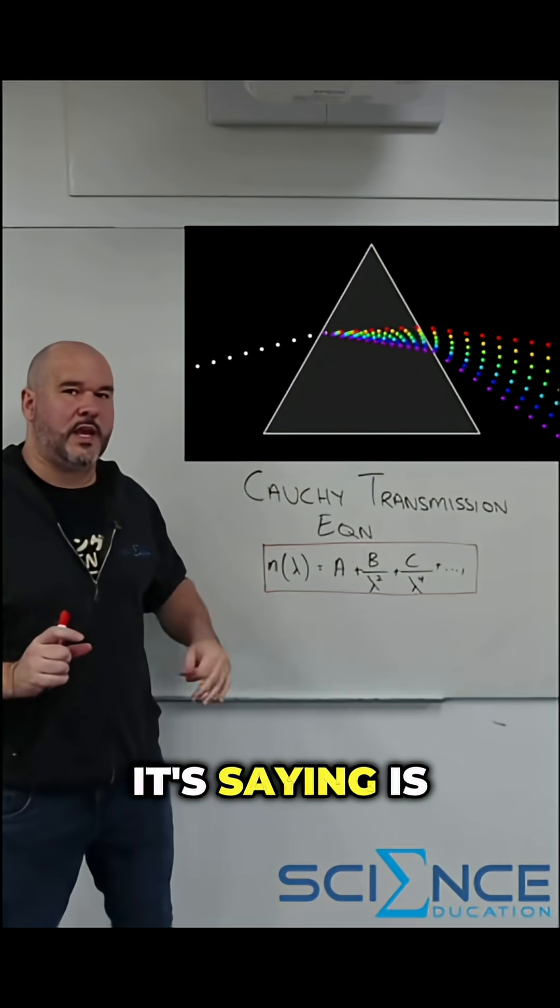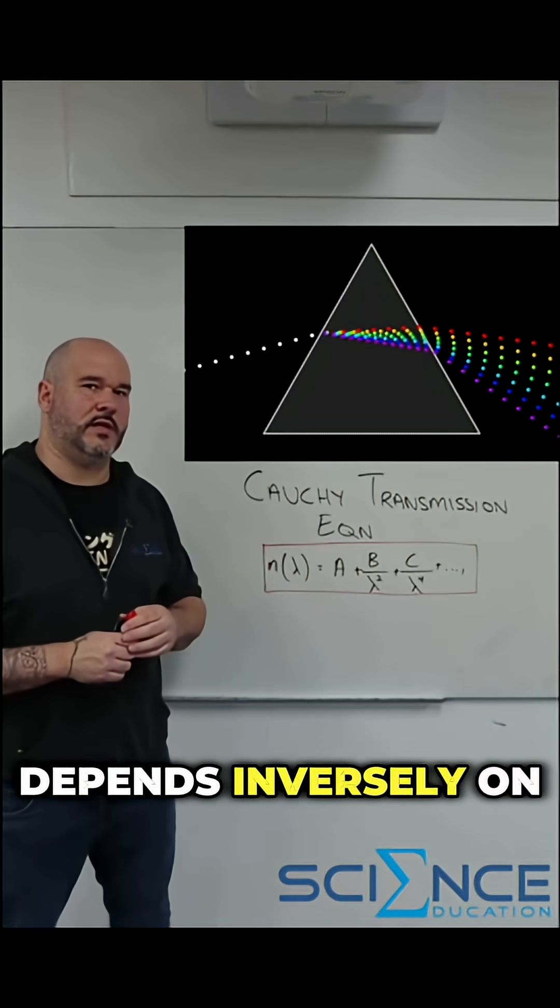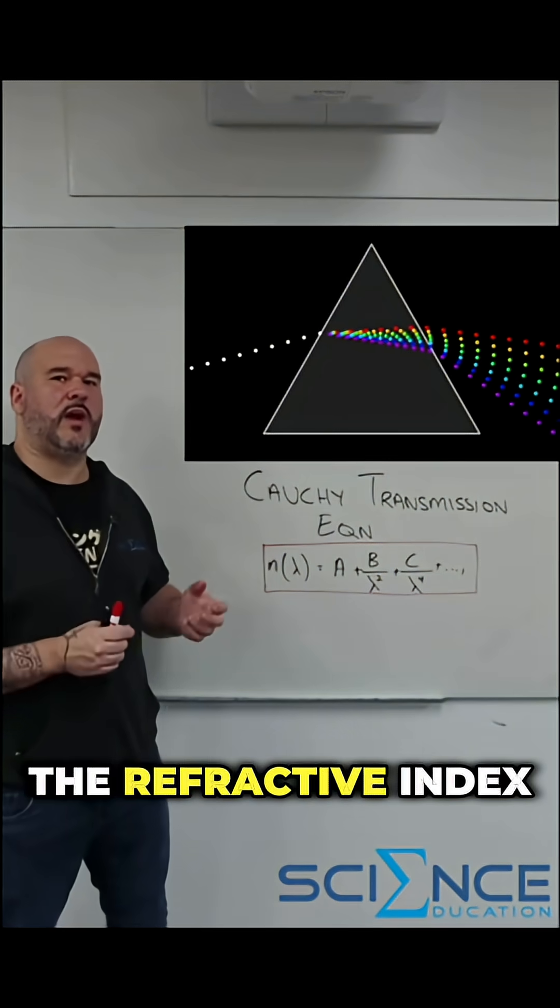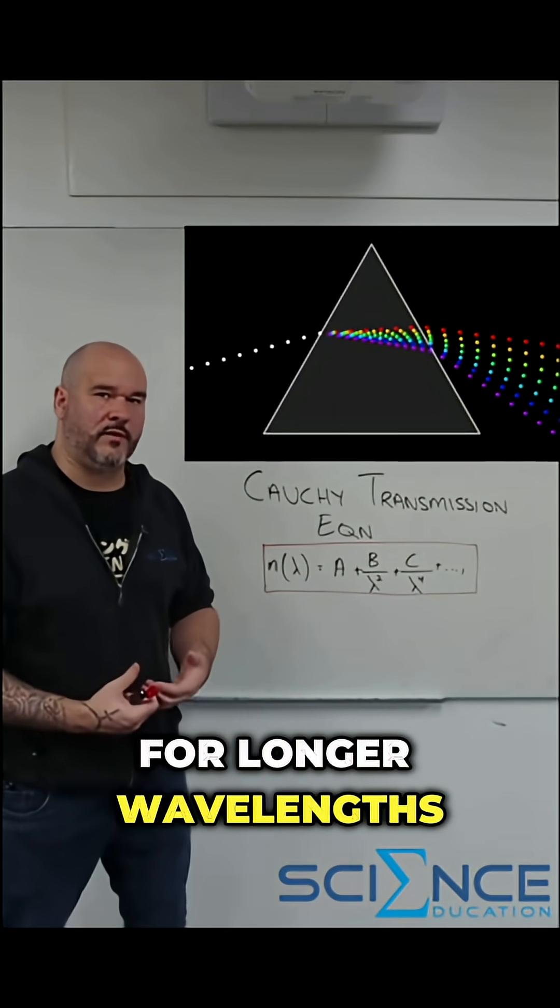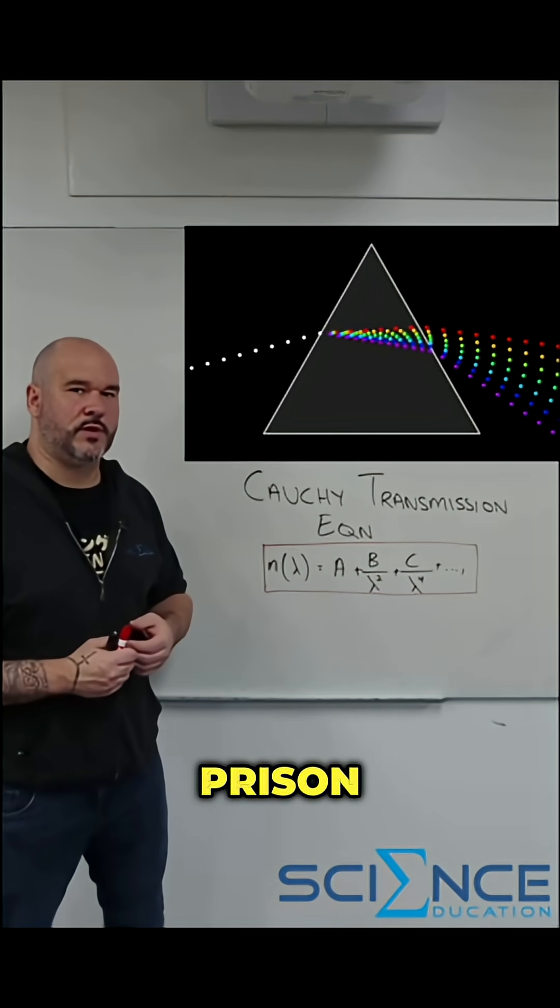Basically what it's saying is the refractive index at a given wavelength depends inversely on the wavelength itself. So as wavelength increases the refractive index actually decreases. And if the refractive index decreases for longer wavelengths then the longer wavelengths actually bend less when they enter the prism.